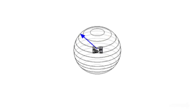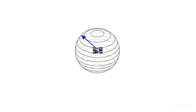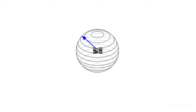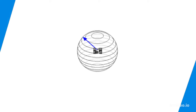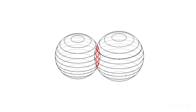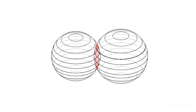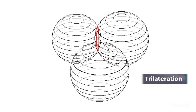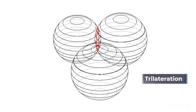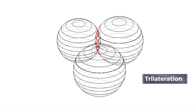Once the distance between the satellite and the receiver is known, we can construct an imaginary sphere using the distance as its radius. However, knowing the distance from one satellite is not sufficient, as the receiver can be anywhere along that sphere. With the distance to a second satellite known, two spheres are constructed and their intersection narrows the receiver's position to a region where both spheres overlap. With a known distance to a third satellite, the intersection of three spheres gives the GPS receiver's position on Earth's surface. This method is known as trilateration.